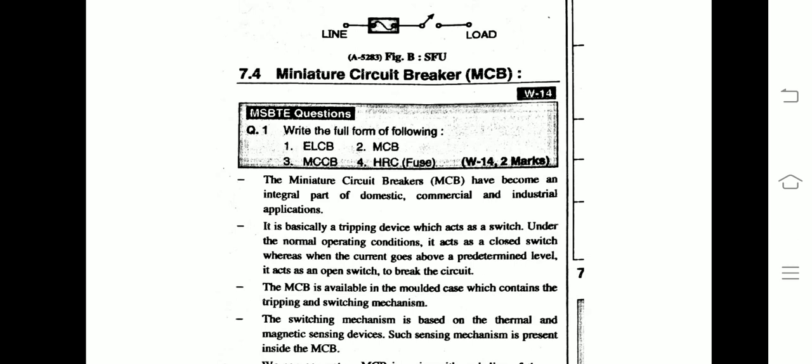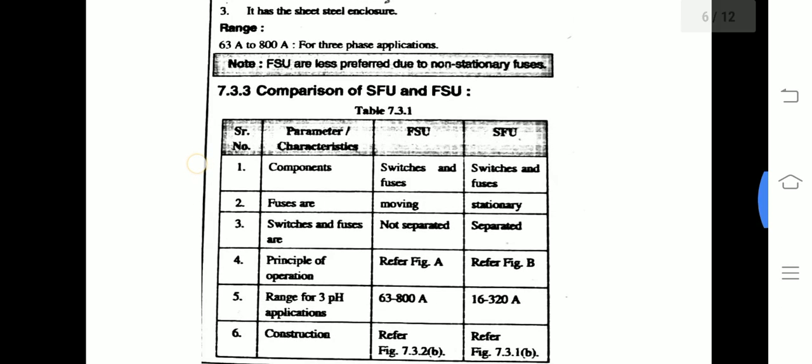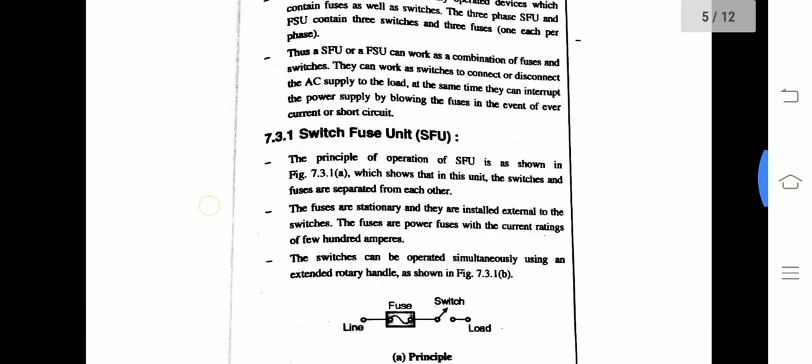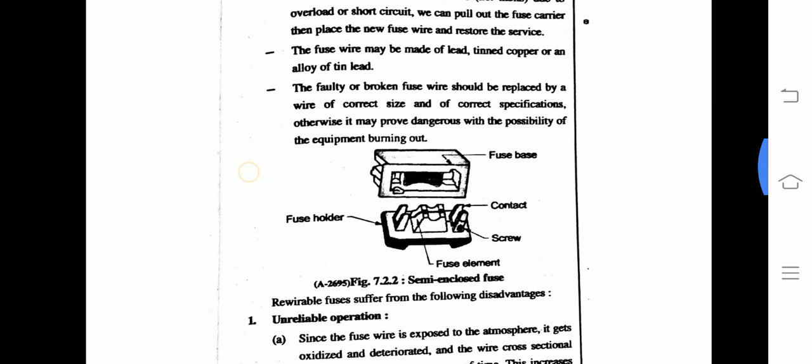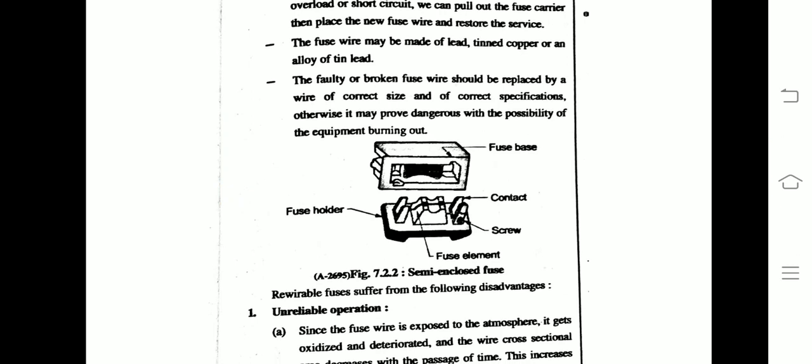Types of fuses include the semi-enclosed fuse, also called the holder type fuse or FSU. The semi-enclosed rewireable fuse consists of a fuse base and fuse holder, with contacts that connect to a fuse wire. The fuse wire is highly sensitive to high current — when high current flows, it will melt and break. When it breaks, the connection is disconnected, protecting your appliances.